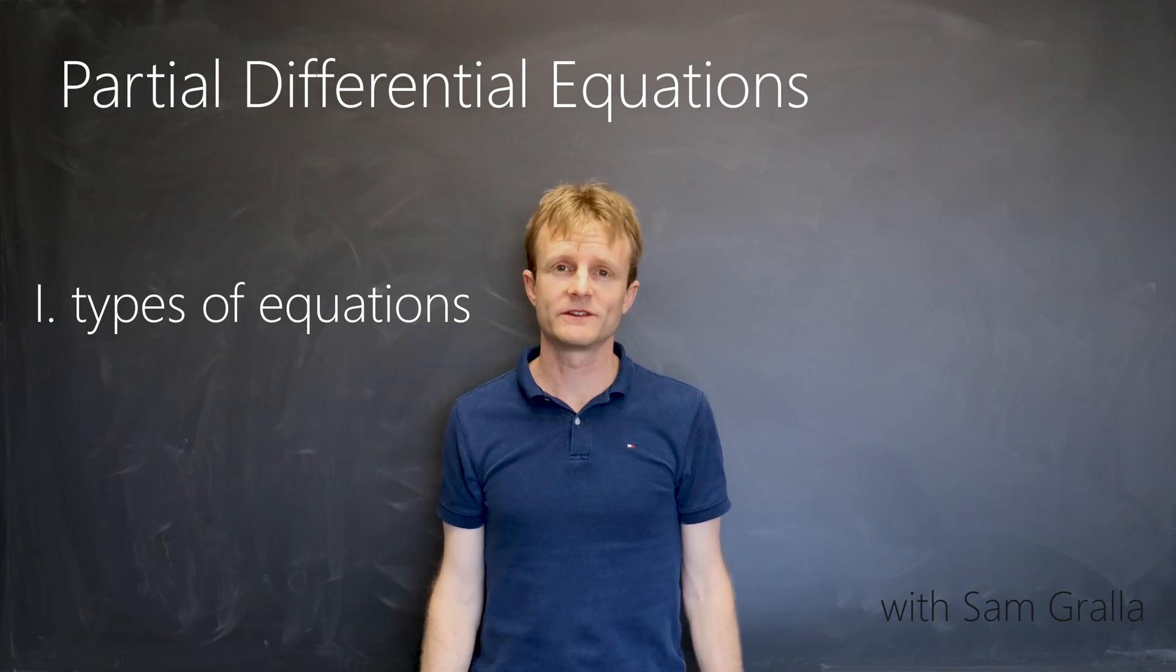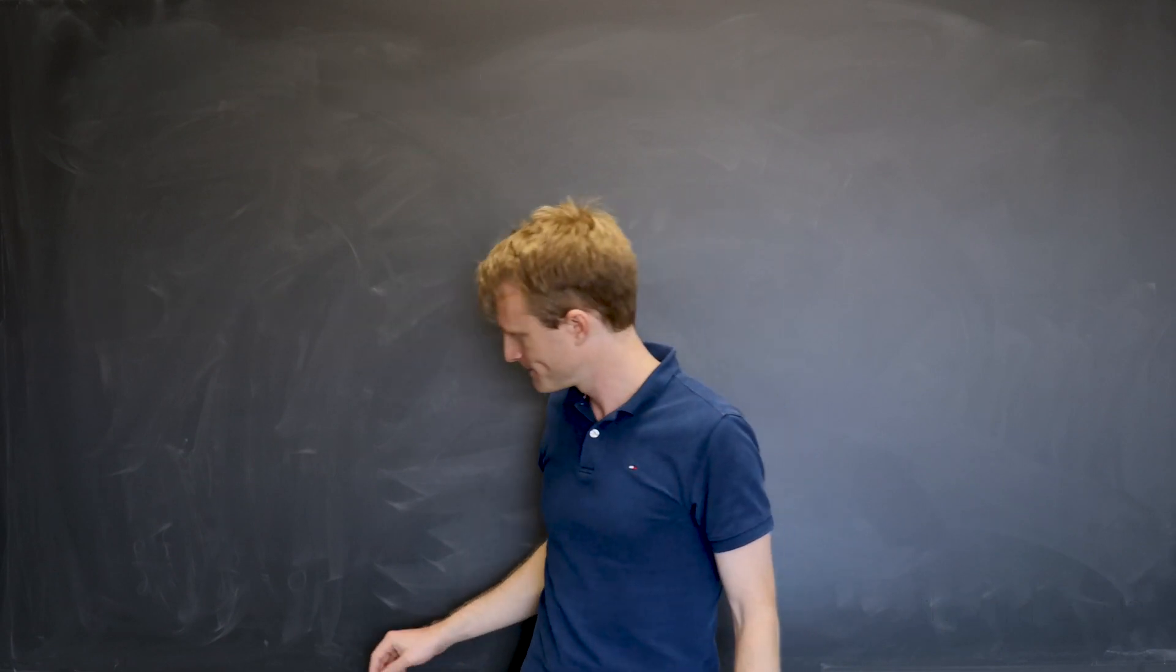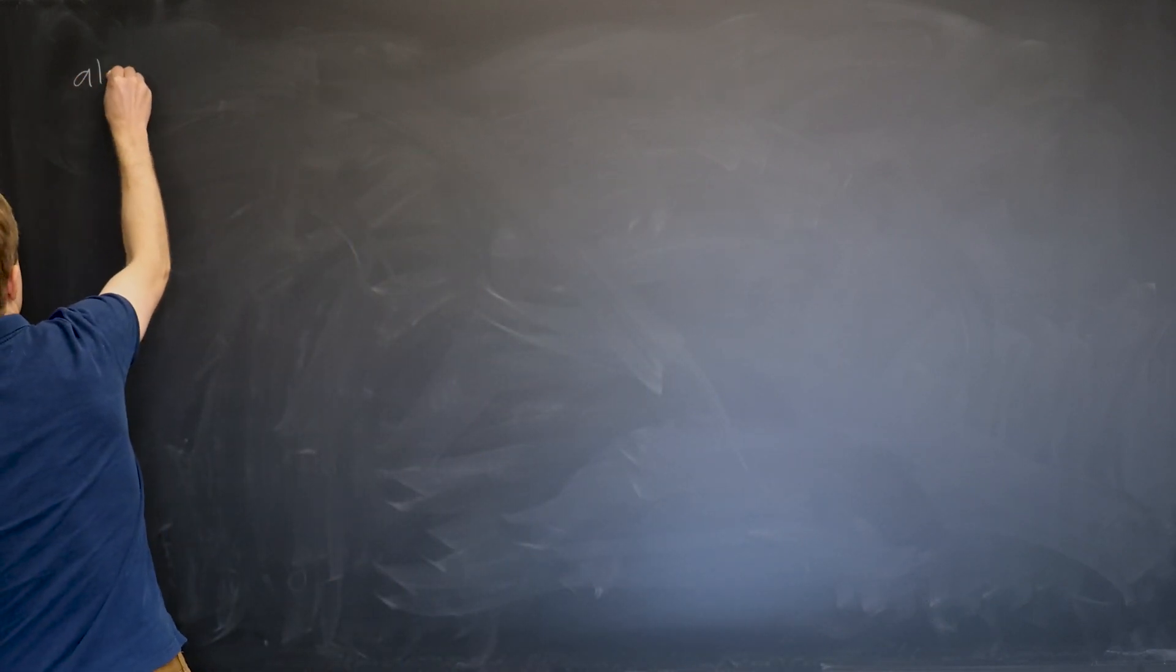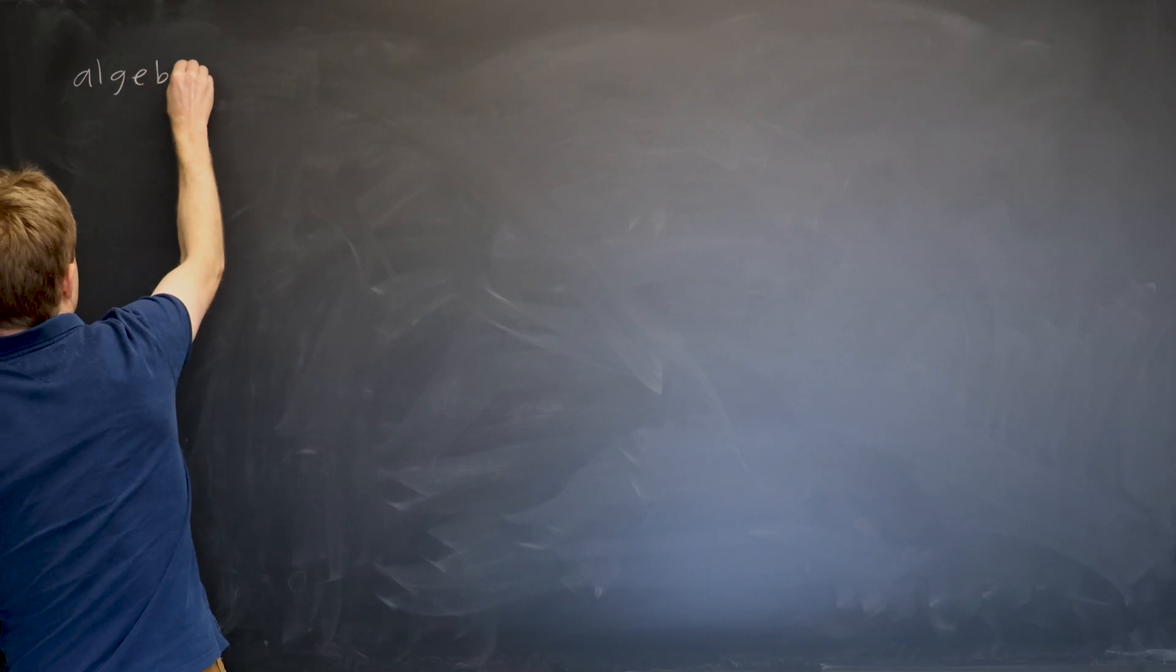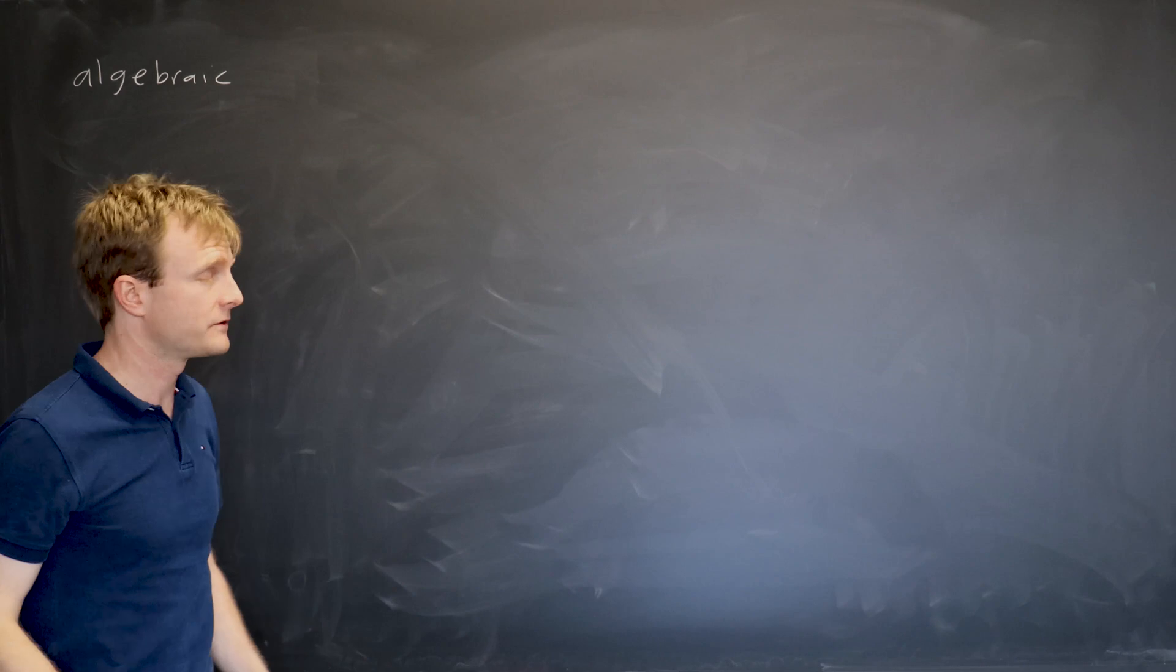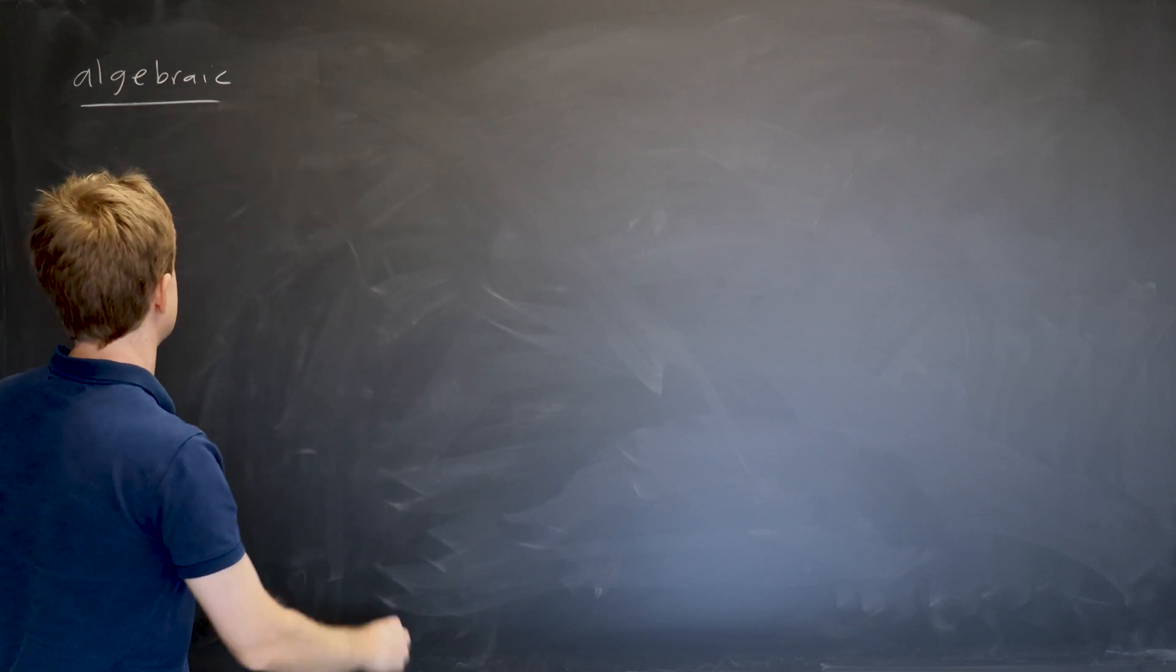There are three basic types of equations that you encounter most commonly in physics. The first are equations like we've been focusing on thus far in the class, equations that don't involve derivatives, just algebra. So they're called algebraic equations.